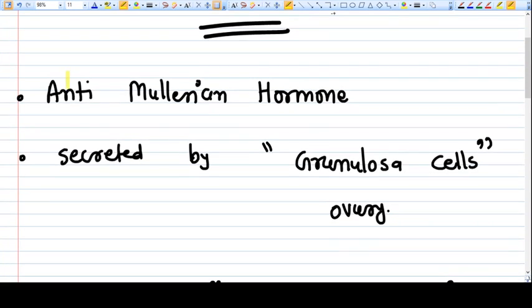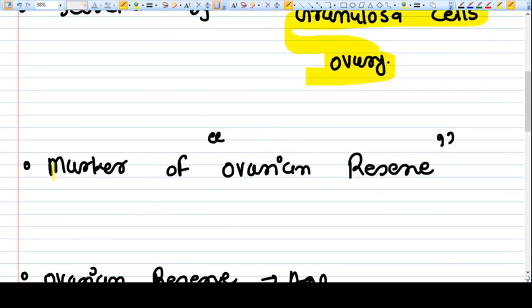So what is the full form? Anti-Müllerian hormone, and that is secreted by granulosa cells of the ovary. The granulosa cells secrete anti-Müllerian hormone. Now this is considered as a marker of ovarian reserve.